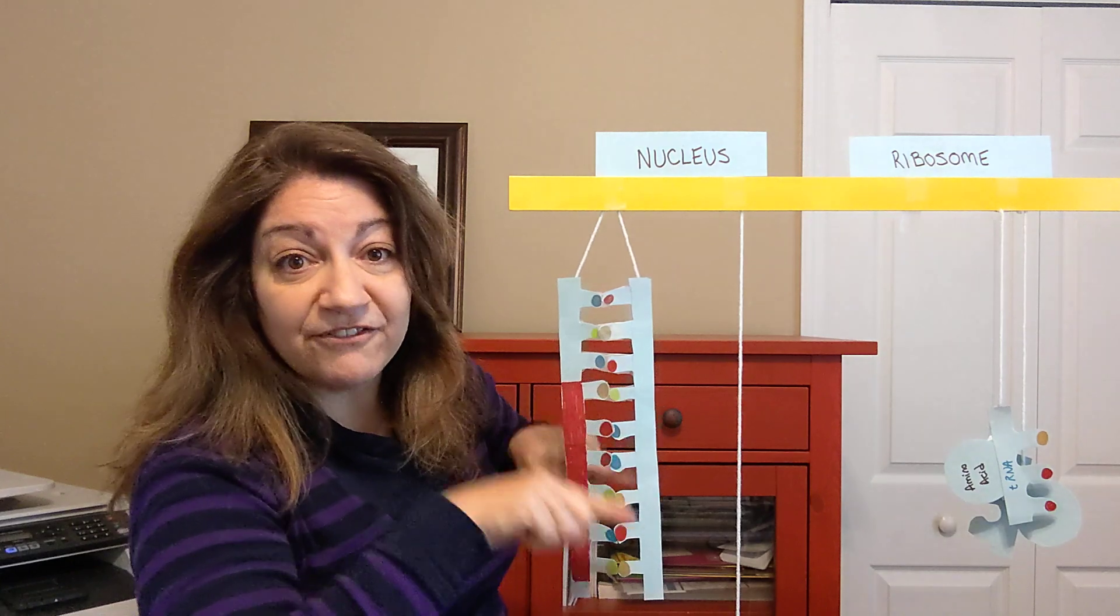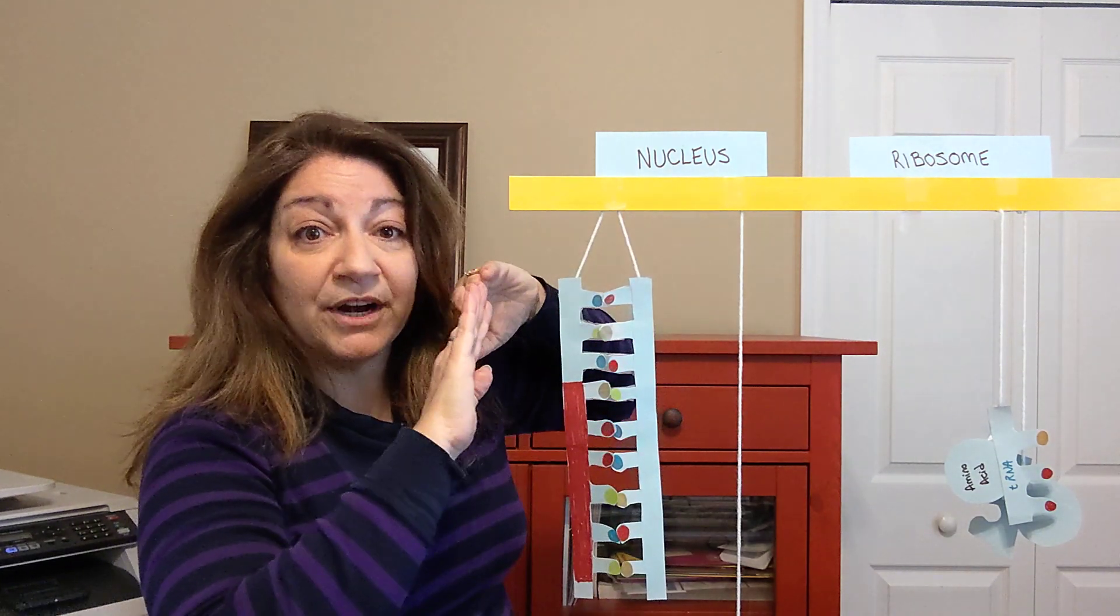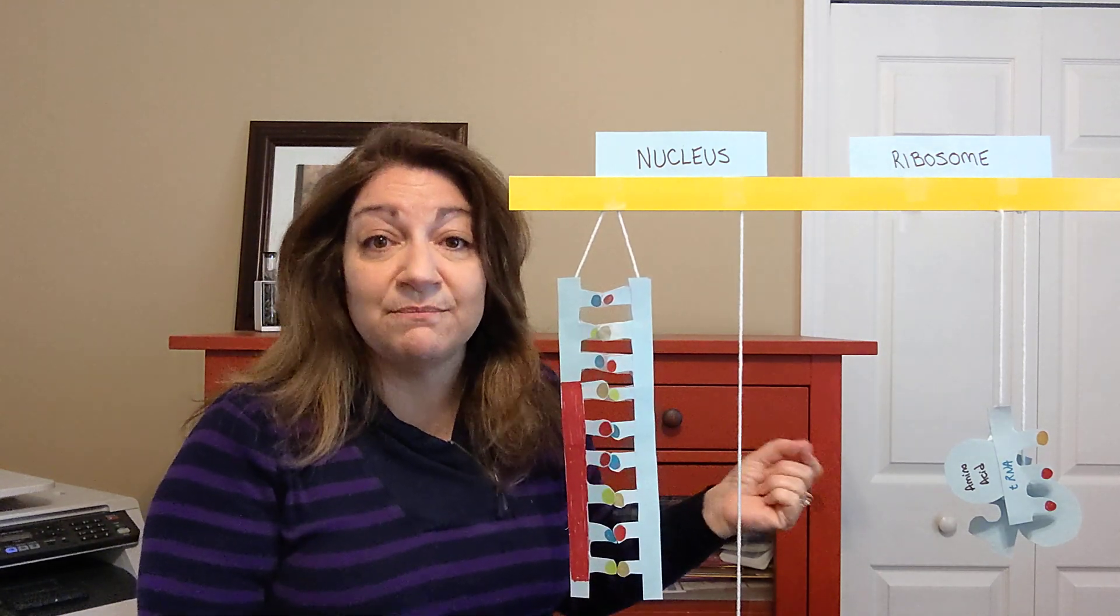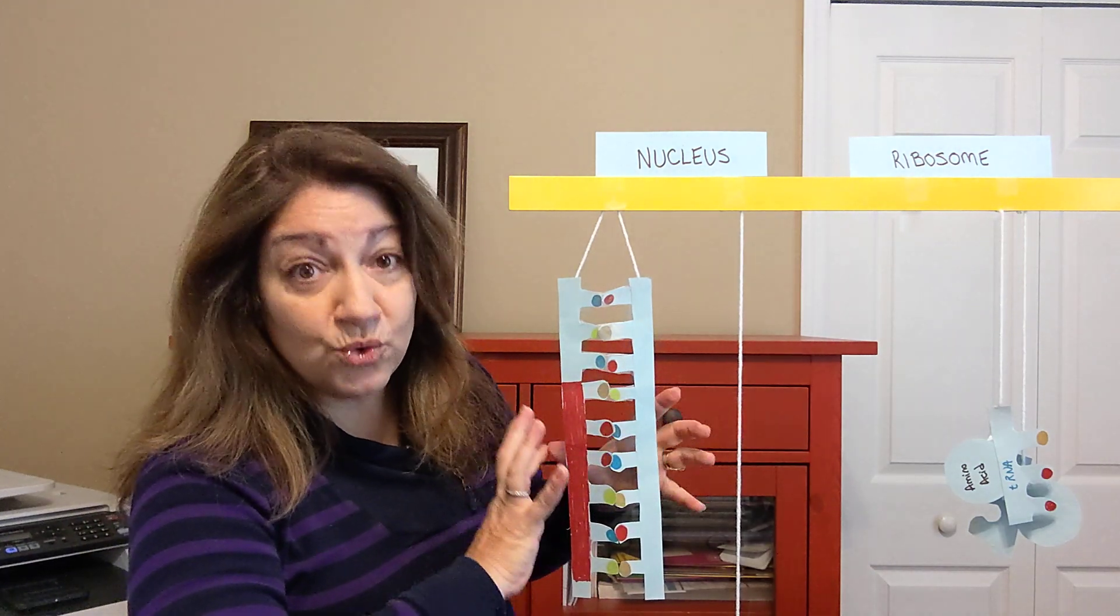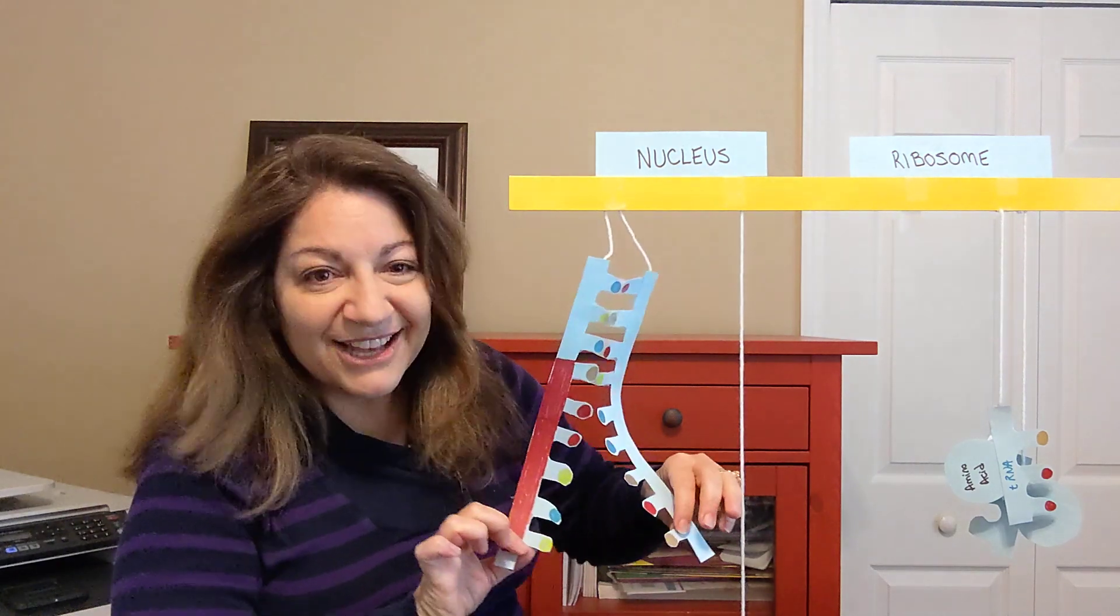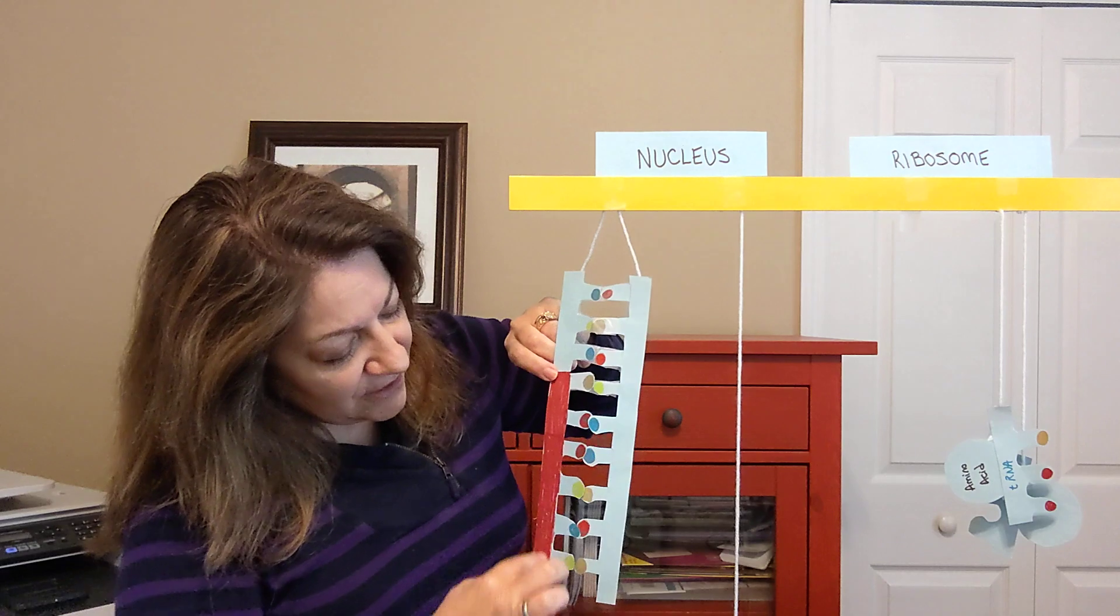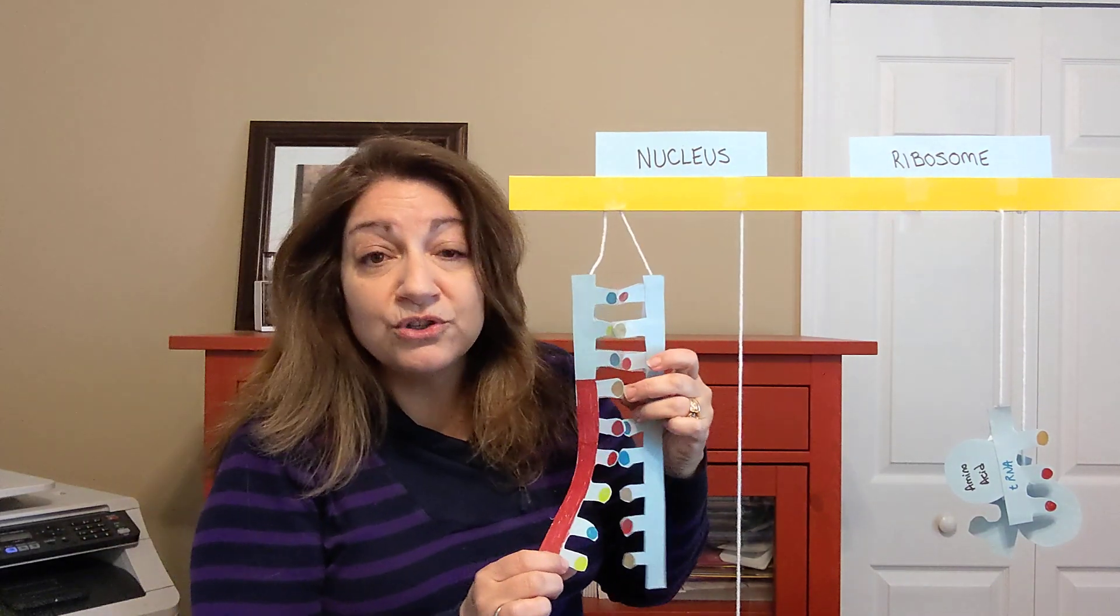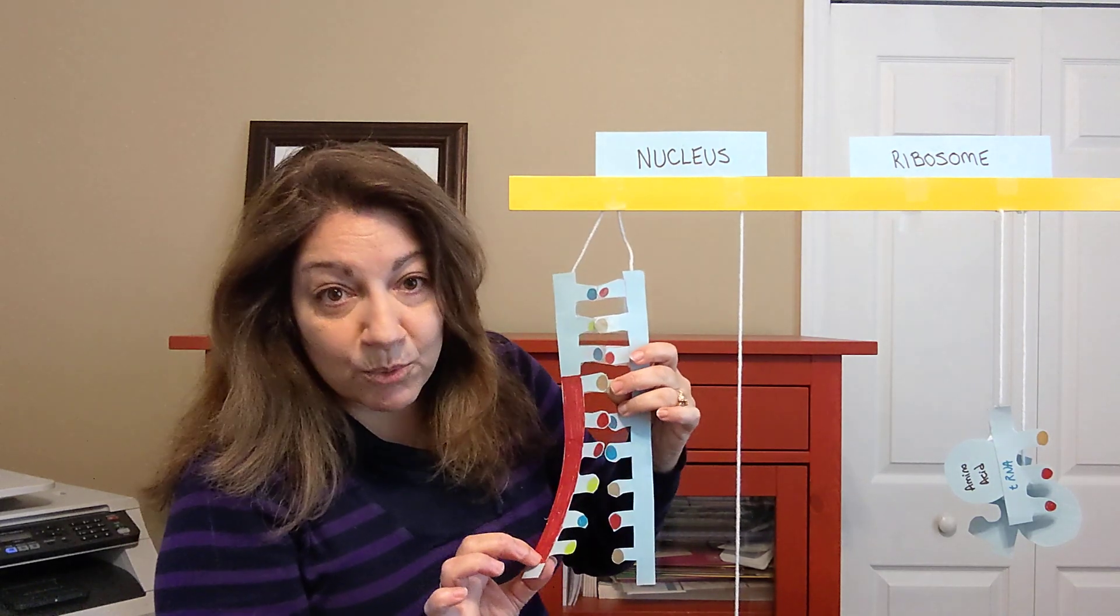And the order of these specific nucleotides provides sentences or information so the cell knows how to make proteins or what proteins to make. And so, what happens is when DNA is ready to replicate itself or give the instructions, it unzips. So, you see how I've got it unzipping like this. And I'm going to speak specifically about this red section here. Let's say this particular section codes for a specific protein.